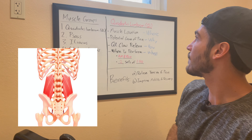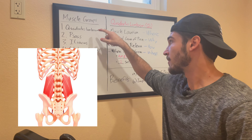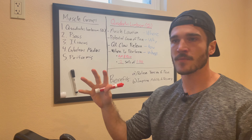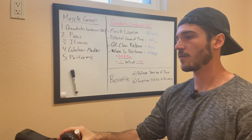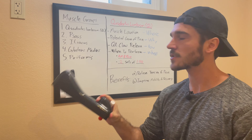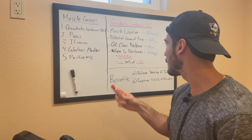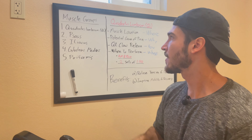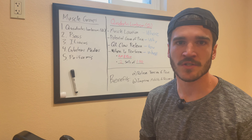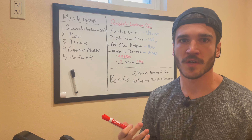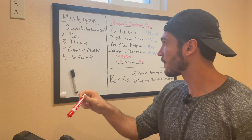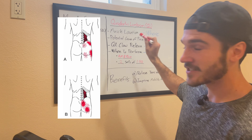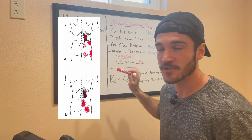First muscle: QL — quadratus lumborum. I'm going to go through each muscle really quickly, show you the pain pattern of where the pain manifests in the body with an image, and then tell you why it hurts. This is the only muscle that's actually in the lower back that's going to contribute to lower back pain.